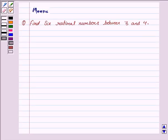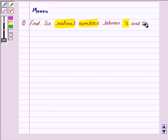Hello friends, let's solve the following question. It says, find 6 rational numbers between 3 and 4.